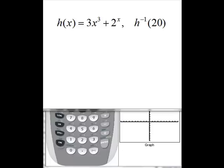Now remember, with this notation, h inverse is an inverse function, h to the negative 1, and if 20 is an input to h inverse, it's an output to h of x. So what we're being asked to solve is where 3x cubed plus 2 to the x is equal to 20.